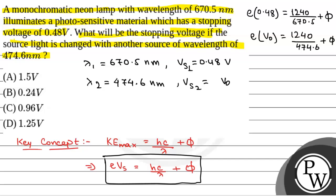Now, if this is equation 2 and this is equation 1, then equation 2 minus equation 1, we will have e into Vs0 minus 0.48 is equal to 1240 into 1 by 474.6 minus 1 by 670.5.